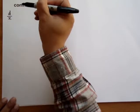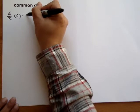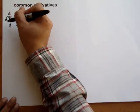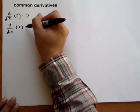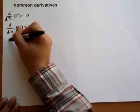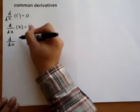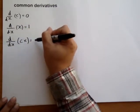The derivative of a constant is always zero. The derivative of x by itself is always one. The derivative of a constant times x is always the constant by itself.